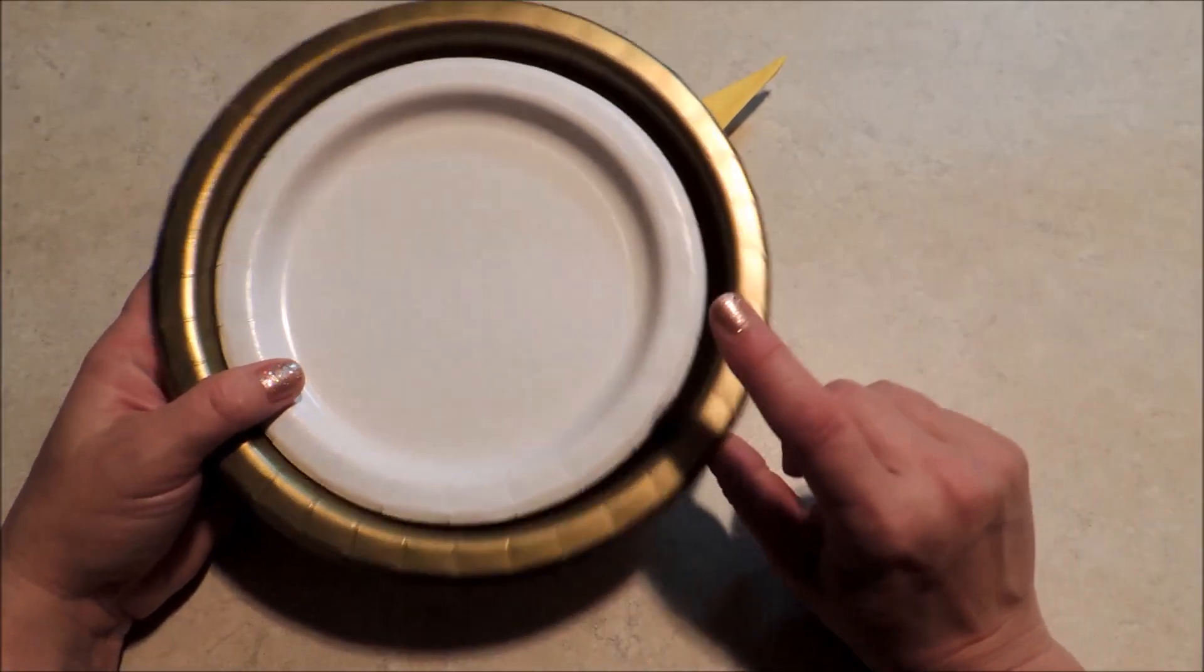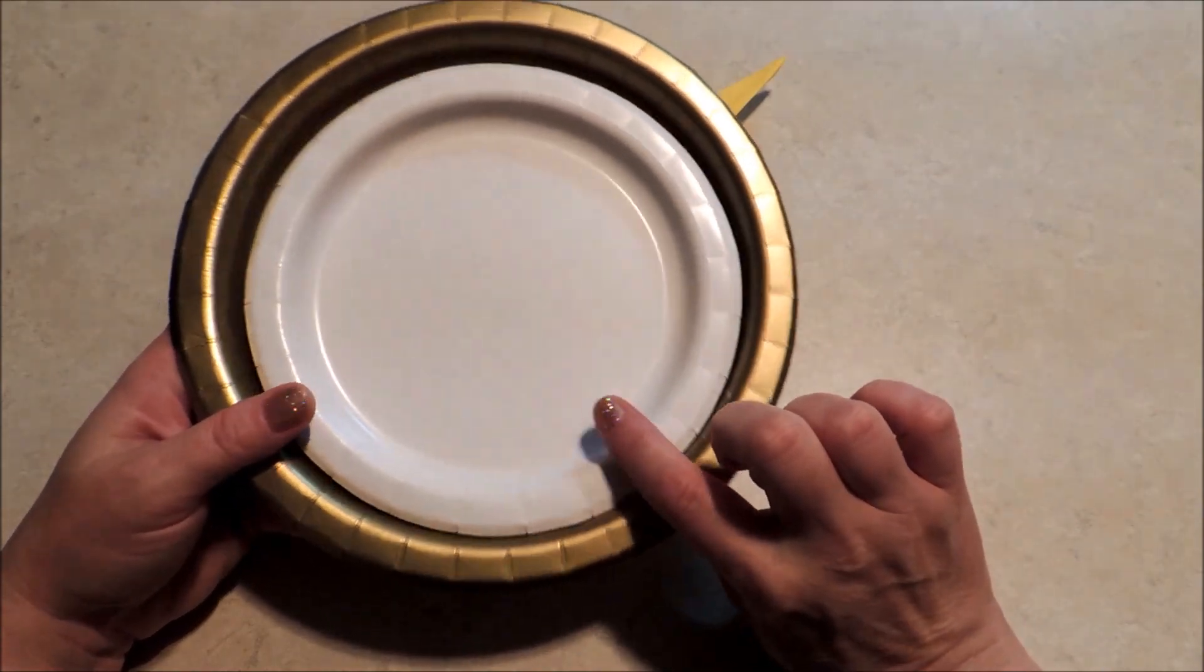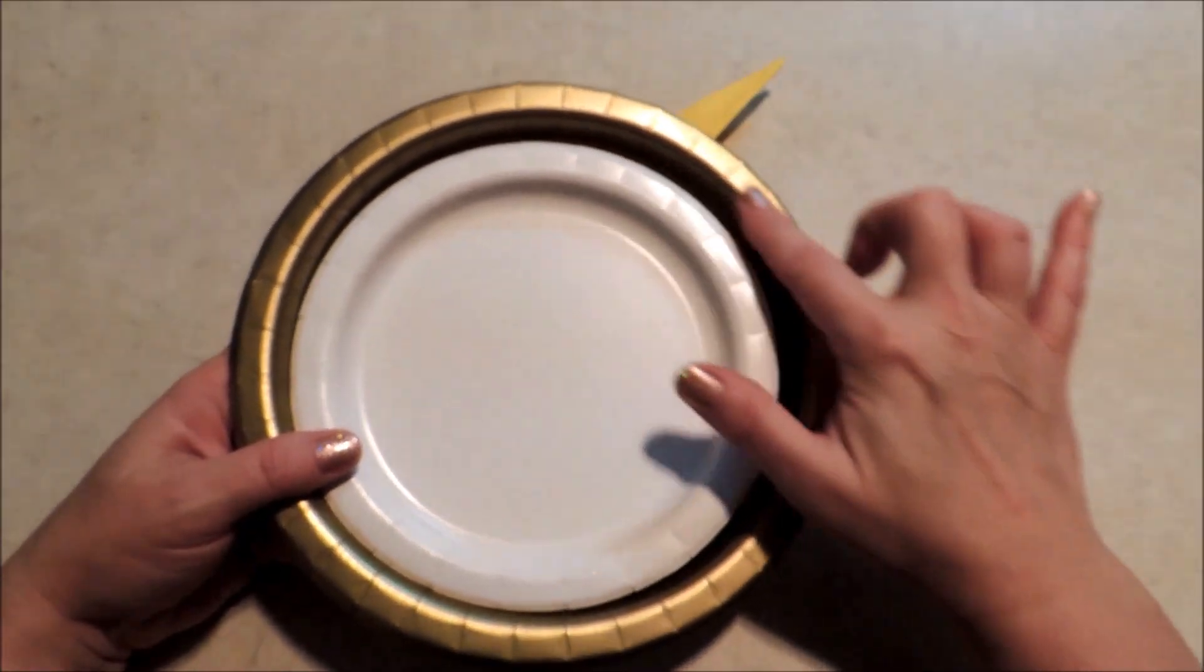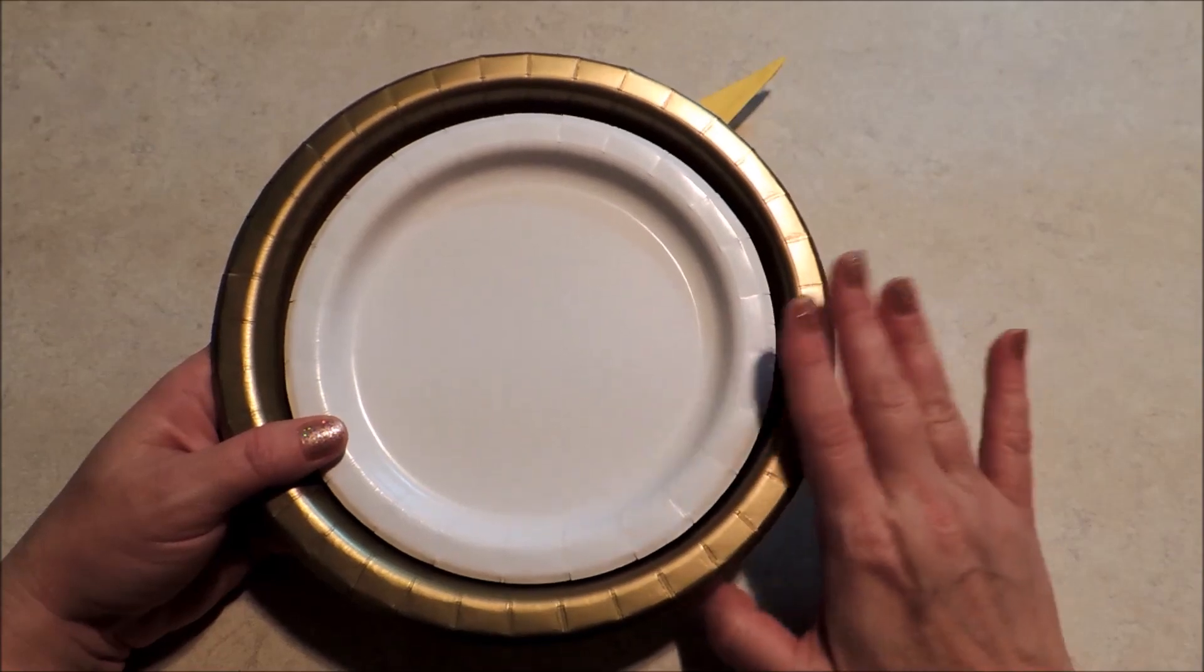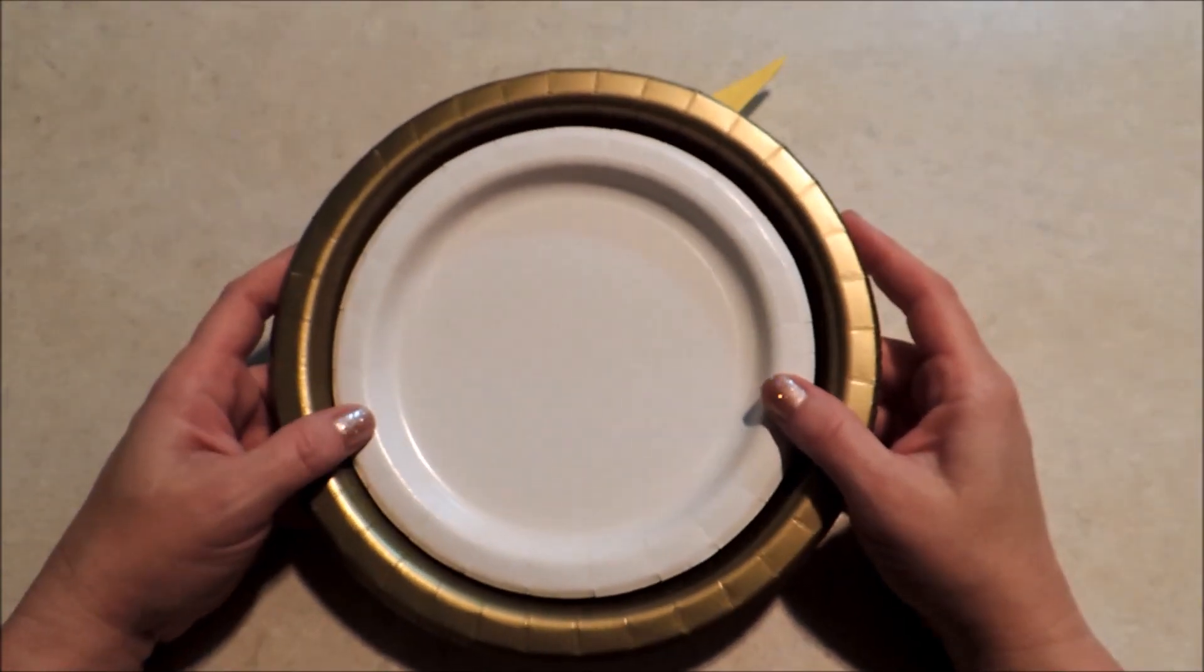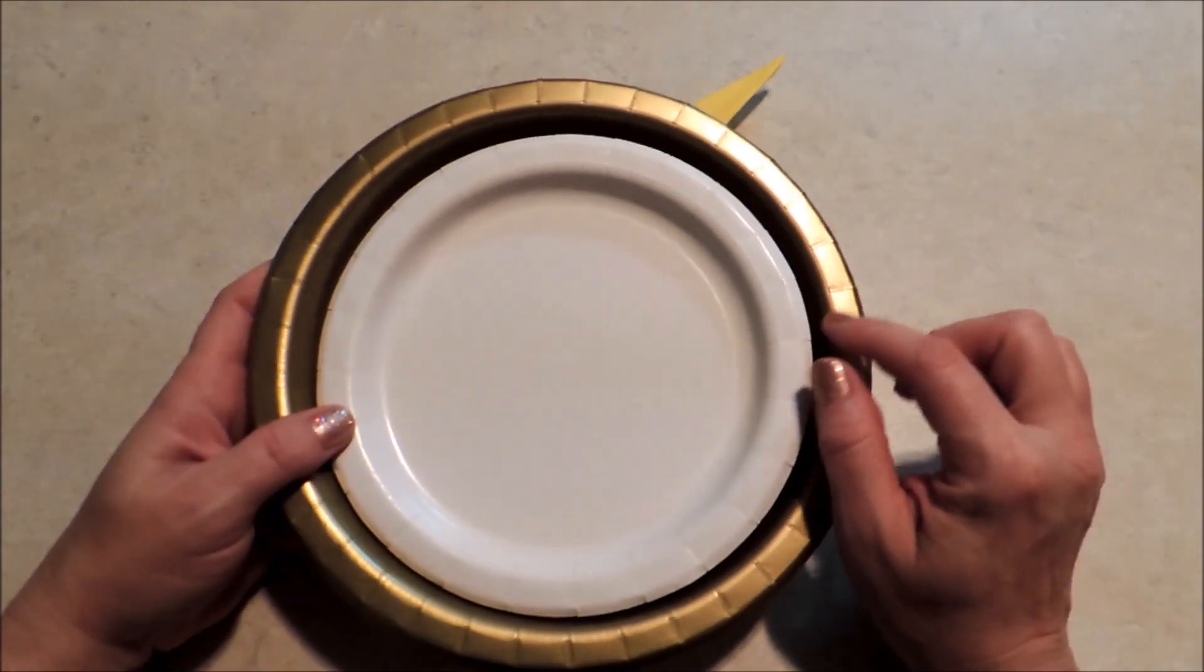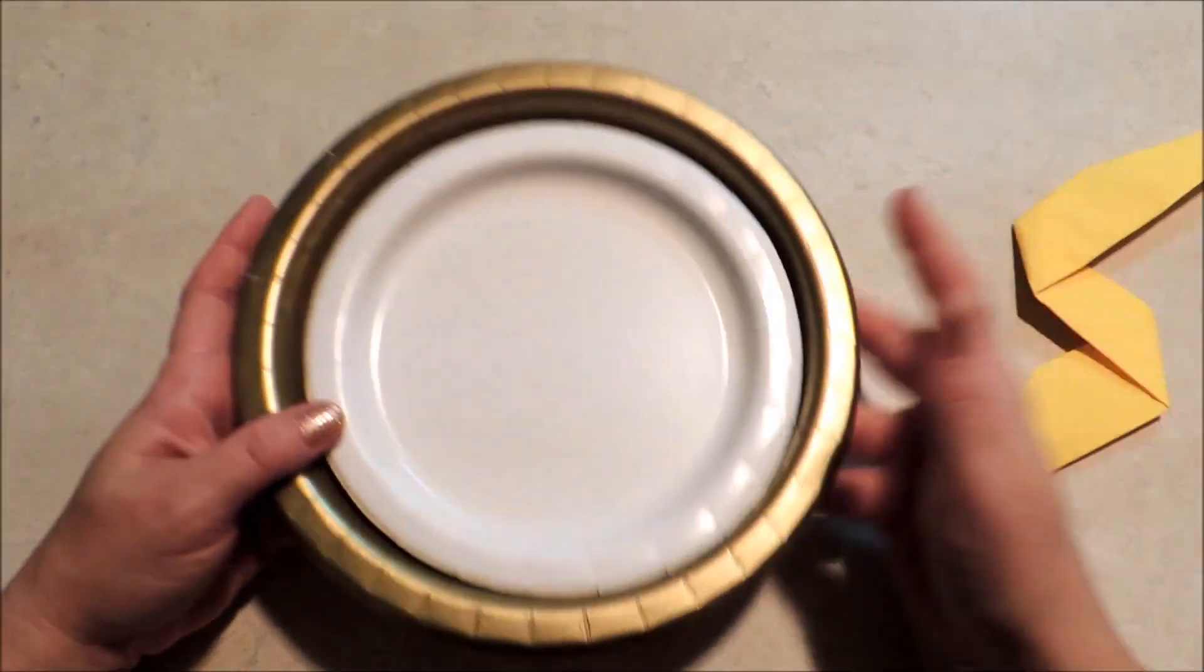And I've got a gold dinner size paper plate and a white dessert size plate. And you can use whatever color you want for these. You may want the black outline around the white circle. Whatever you want to use. If you watch the show, you know that the color of the emblem kind of changes a couple of times along the way anyway. But I like the gold, so I'm going to be using that today.